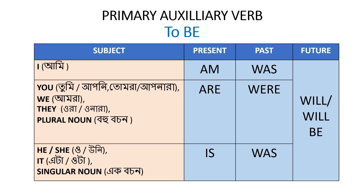If the subject is 'you', 'we', 'they', or a plural noun — for example: boys, girls, cats, tables — these are plural nouns. In this case, present tense uses 'are', past tense uses 'were', and future tense uses 'will' or 'will be'.